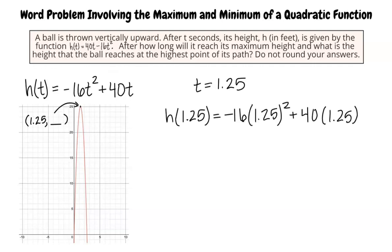Sure! If we substitute t equals 1.25 into this equation, we will get h of 1.25 equals negative 16 times 1.25 squared, plus 40 times 1.25. This simplifies to negative 25 plus 50. We write h of 1.25 equals 25. You are right!